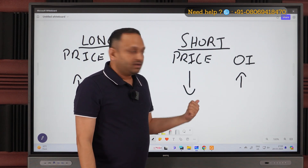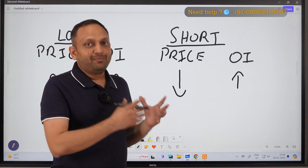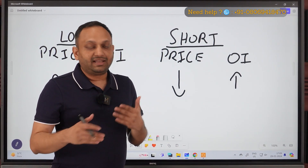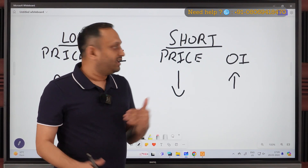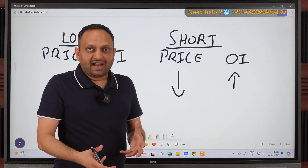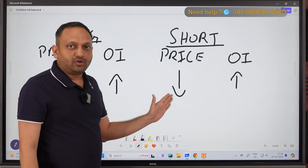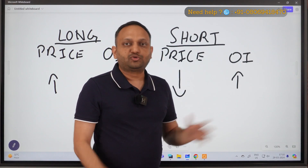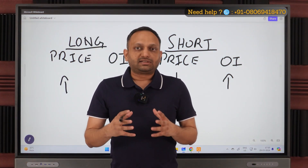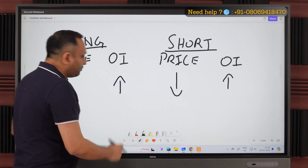Similarly, short built-up is when the price is going down. But a price going down can have two scenarios — maybe someone bought earlier and is squaring off their trade, which might not be a sustained down move. We also look at OI: if new contracts are getting added while price is going down and OI is going up, we call it a short built-up. Knowing long and short built-up gives us more confidence about what is happening inside the market.